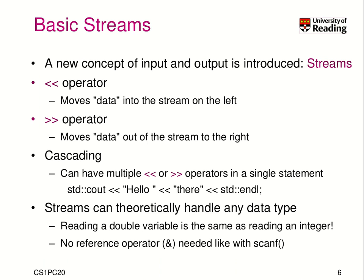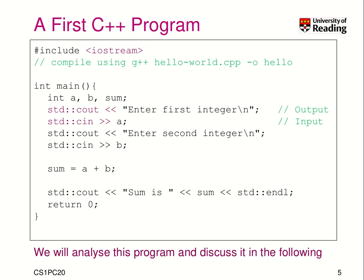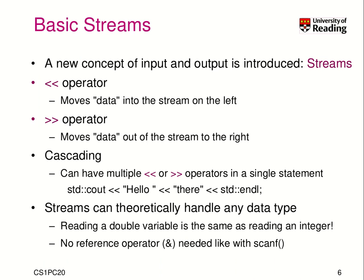When we move it to the right, we can read data. This is what we find with Cin — that's the standard input channel. We move data from the input into the variable a. So we try to read an integer from the input channel.